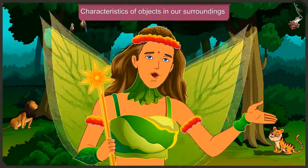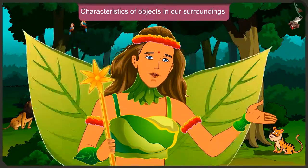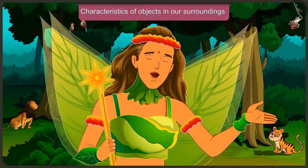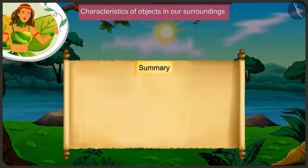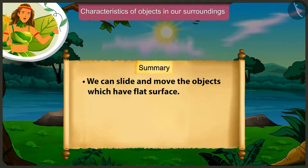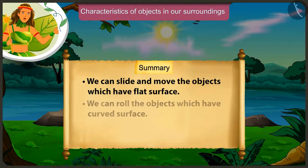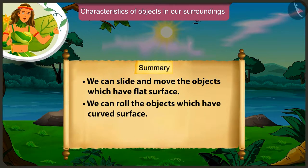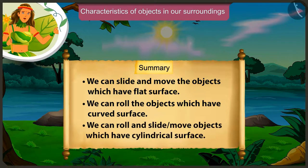Friends, today we understood some interesting facts about the characteristics of objects around us. For example, we can slide the objects with a flat surface. We can roll the objects with a round surface. And that we can roll and slide objects with a cylindrical surface.